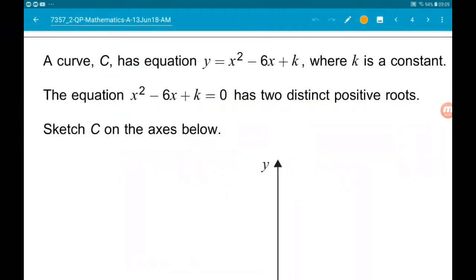Okay, question four. The curve C has equation y equals x squared minus 6x add k, where k is a constant.